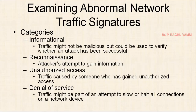Any attacker will perform the first stage as information gathering, followed by reconnaissance. Reconnaissance is the technical information gathering by the attacker — which port is open, which port is closed, what type of services are running on these ports. Next is unauthorized access — traffic caused by someone who has gained unauthorized access. Next is denial of service — traffic might be part of an attempt to slow or halt all connections on the network device. The abnormality may come for these following reasons.